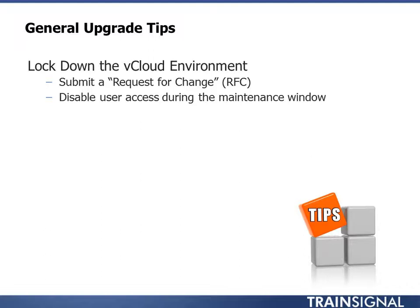The first tip, at least in a vCloud environment, is to lock it down — go ahead and submit your request for change, or change control, sometimes called an RFC, so that people know you're making this change. That gives you a maintenance window with a set of hours to complete the upgrade, and it enables you to authoritatively disable user access. You can call the shots and kick people out so they're not provisioning VMs and vApps. It's not a supported configuration to have users active during an upgrade, so submit the change request.